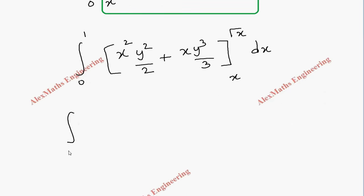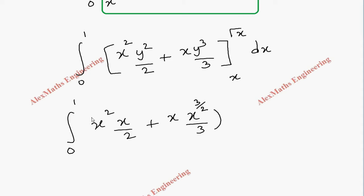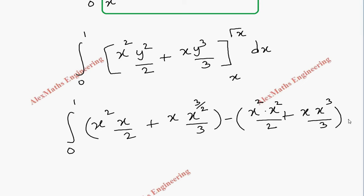Now we substitute the upper limit: wherever y appears, substitute √x. So √x squared is x, giving x · x/2, and x · x^(3/2)·(2/3). Then we substitute the lower limit x: x² · x²/2 plus x · x³/3. At the end we have dx.